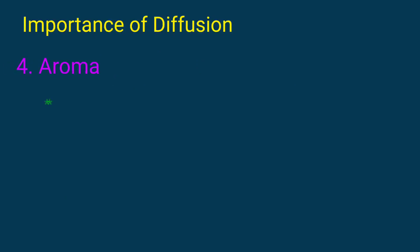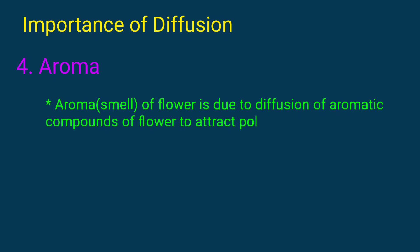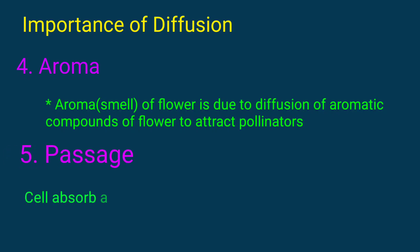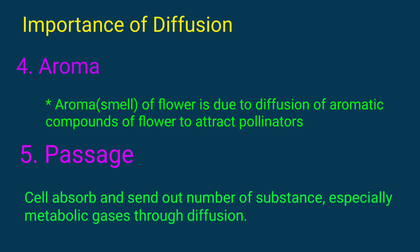Aroma: the aroma of a flower is due to the diffusion of aromatic compounds of the flower, which attract pollinators. Cells also observe and send out a number of substances, especially metabolic gases, through diffusion.